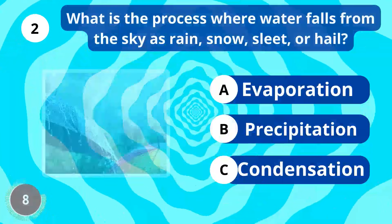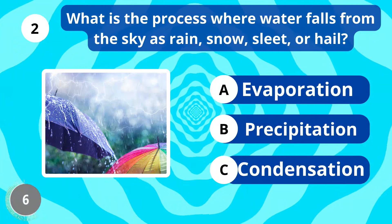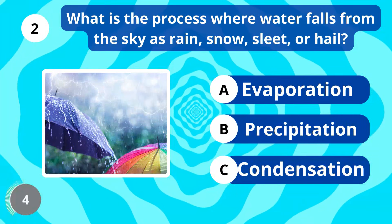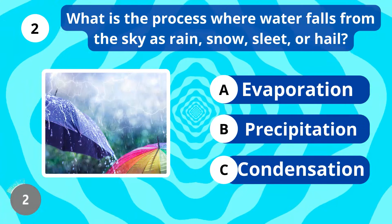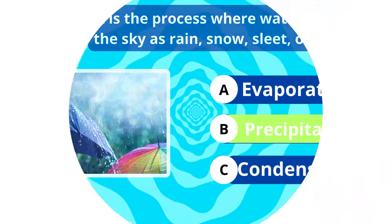What is the process where water falls from the sky as rain, snow, sleet, or hail? Precipitation.